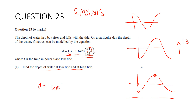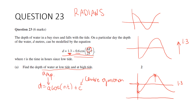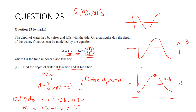Our trig model has the form a·cos(nt) + c. The centre of motion c is 1.3, and the amplitude a is 0.6. So the depth of water at low tide is 1.3 minus 0.6, which is 0.7 metres. And high tide will be 1.3 plus 0.6, which is 1.9 metres.